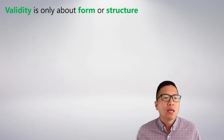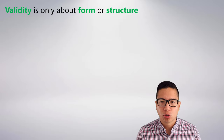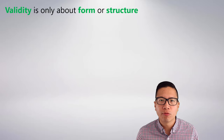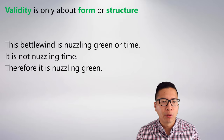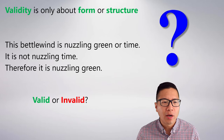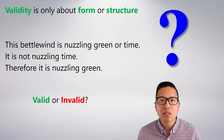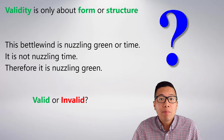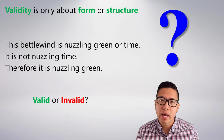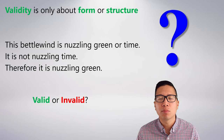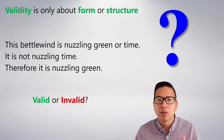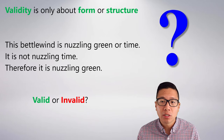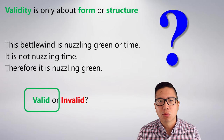Validity is just about the form or structure of the argument — it doesn't really matter so much what the content is. It's the actual structure that confers truth forward to the conclusion. Here's a silly example: 'This beetle wind is nuzzling green or time. It is not nuzzling time. Therefore, it is nuzzling green.' What does this mean? I have no idea. Maybe it has meaning in some other discipline, but it doesn't matter. Even without knowing what it means, I can still study it in terms of logical validity and answer: is this valid or invalid? Take a second — the answer is it's valid. We'll actually come back to this one a little later.